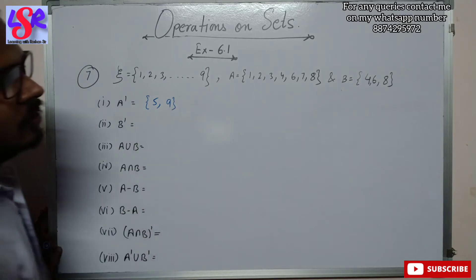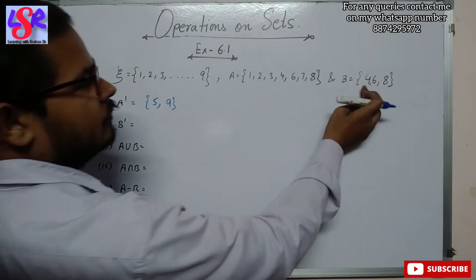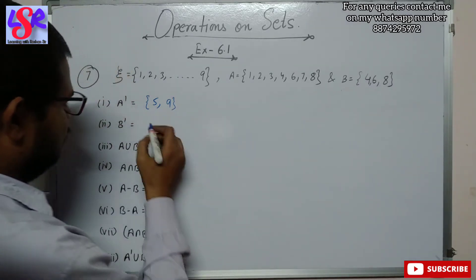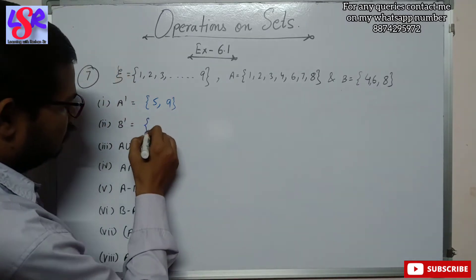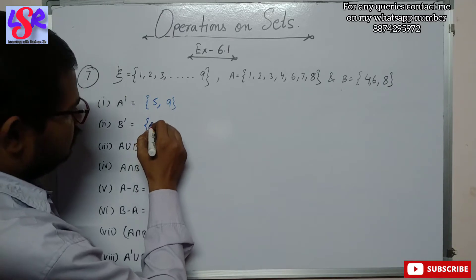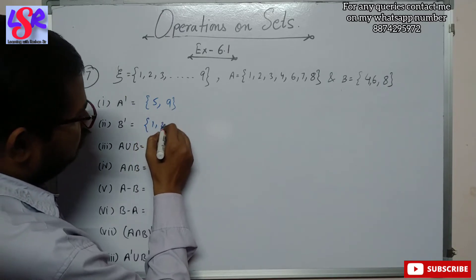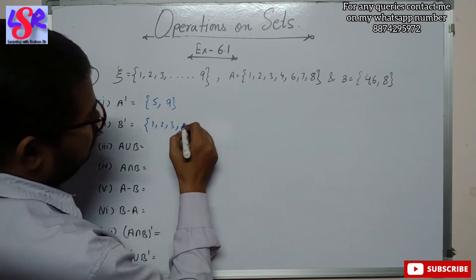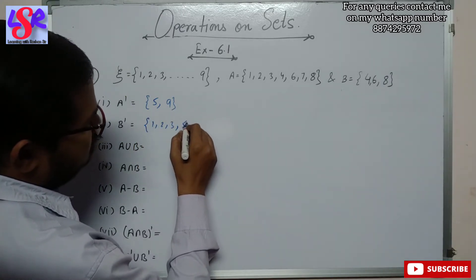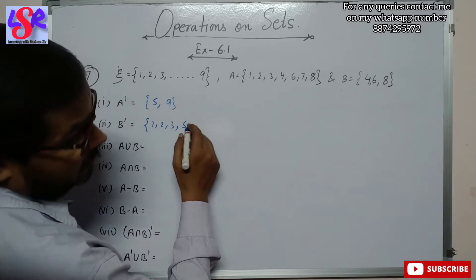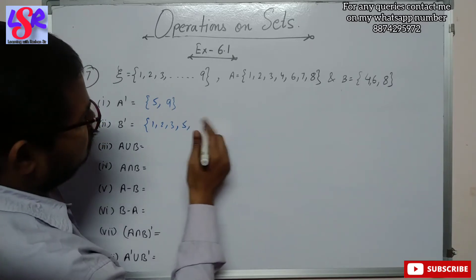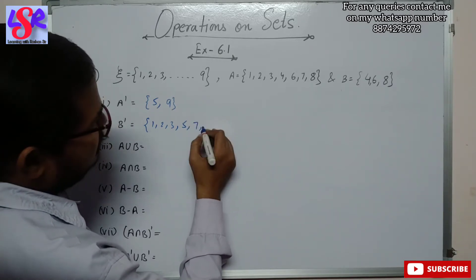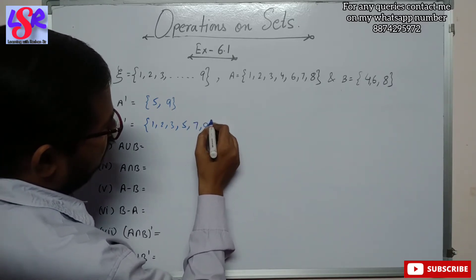For B complement we are not going to write 4, 6 and 8, and the rest we are going to write. So it is 1, 2, 3 — 4 is there so we skip it — 5, 7 — 6 is there — and 9 — 8 is there.